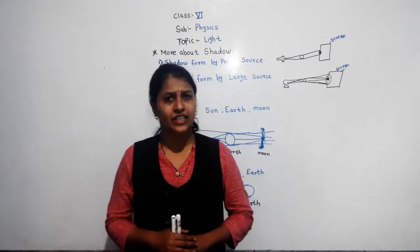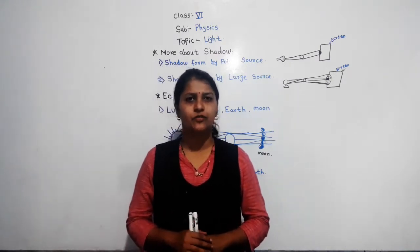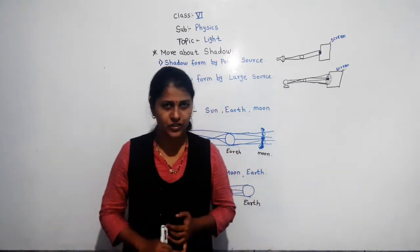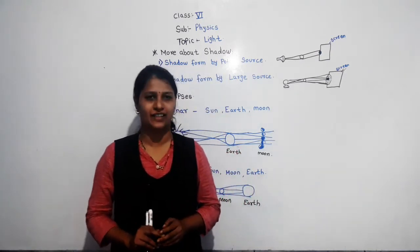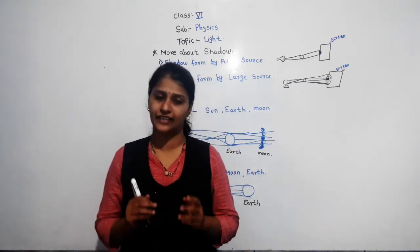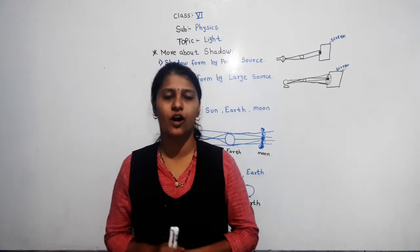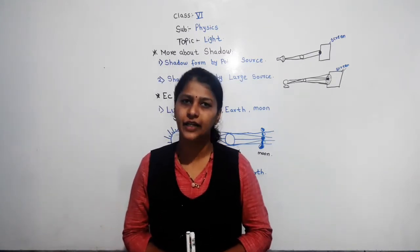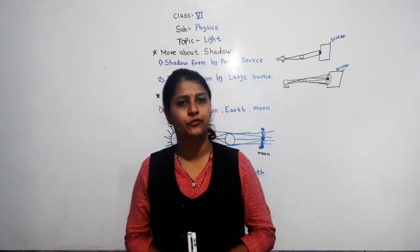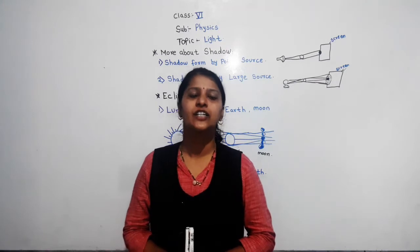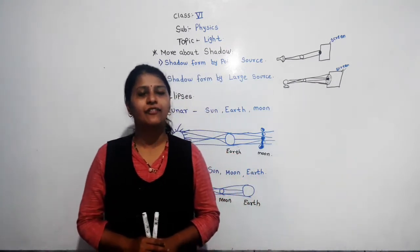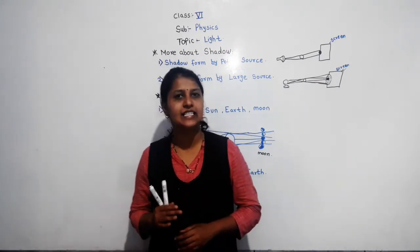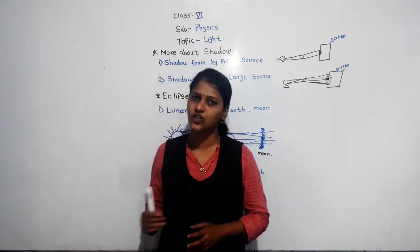Can you tell me what are the conditions needed to form a shadow? The three conditions are: an opaque object, an opaque screen, and a source of light. These three things are very important to form a shadow. Then we discussed about the characteristics of the shadow.